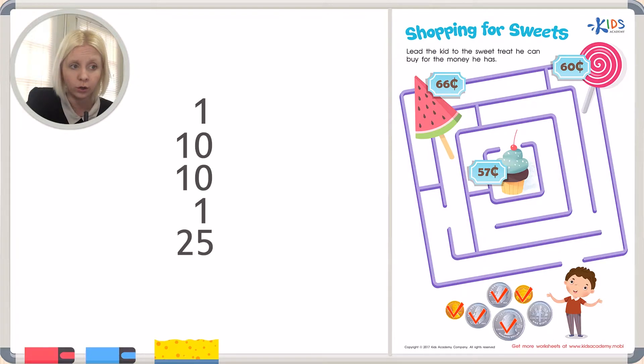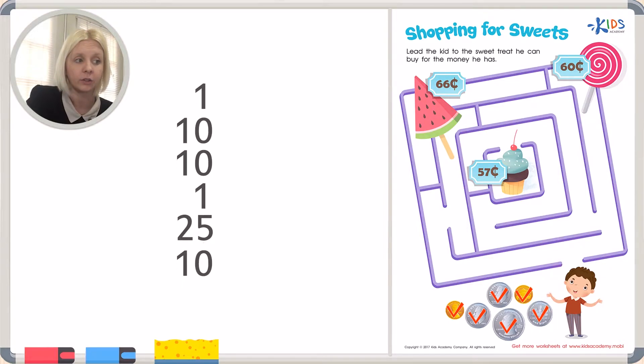I've got my quarter and I've got my two pennies. Last one I've got my dime, right? There's my dime. And then I'm going to line this up and I'm going to add them up together.